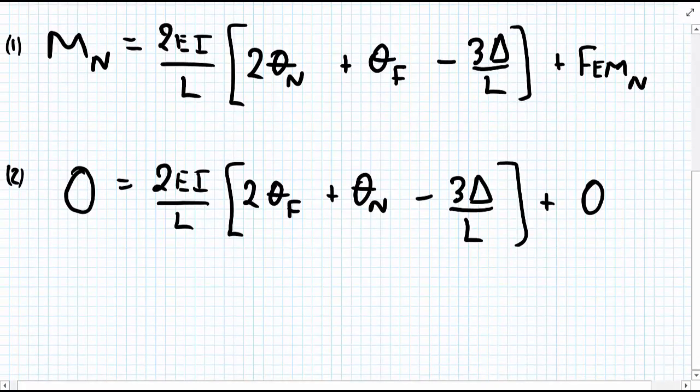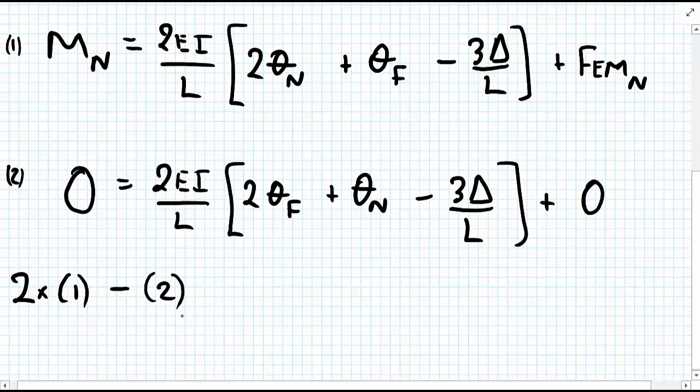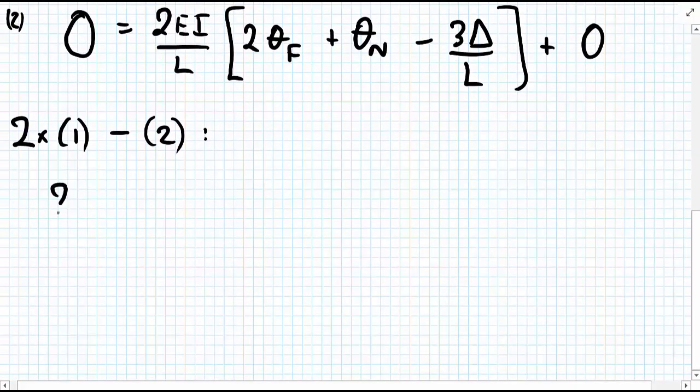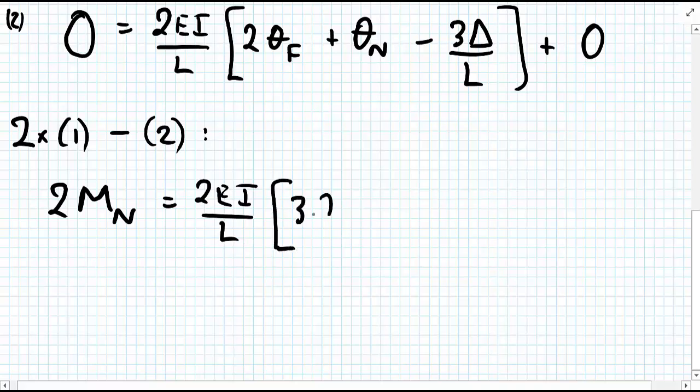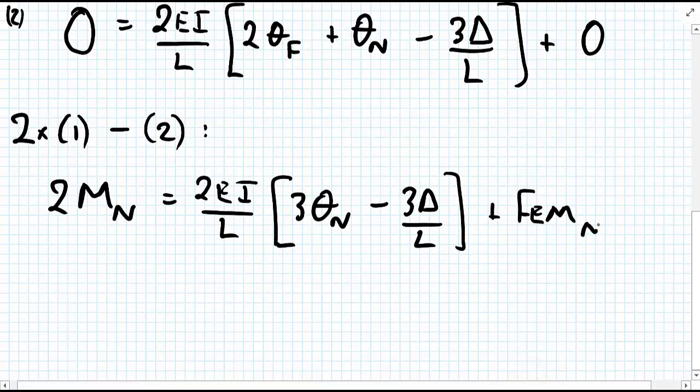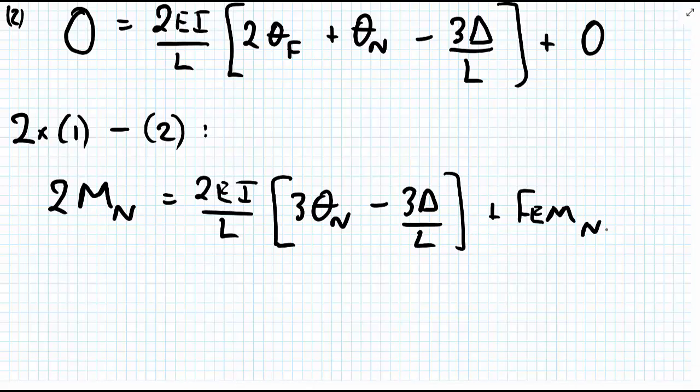Now, just solving simultaneously, what we can do is two times equation 1 minus equation 2 to solve simultaneously. We get 2M_N equals 2EI over L, and then taking the stuff in the brackets away, we have 3θ_N minus 3Δ/L plus FEM_N. So that's two times equation 1 minus equation 2, and we can see we've got a 2 there and a 2 there.